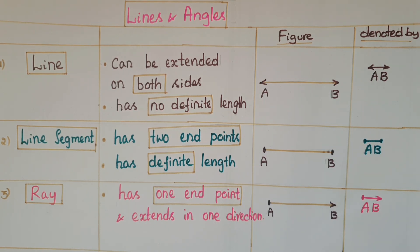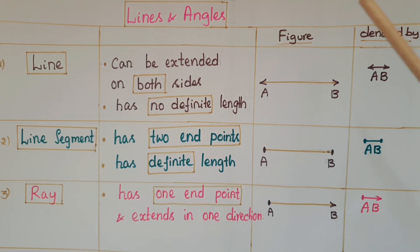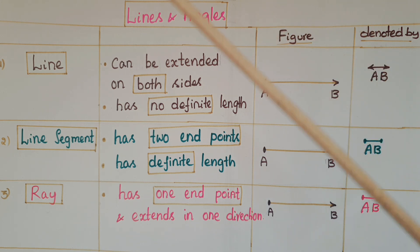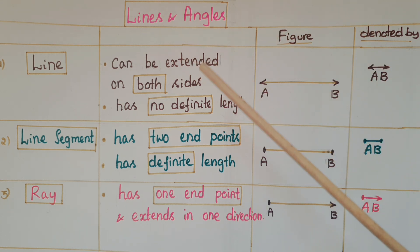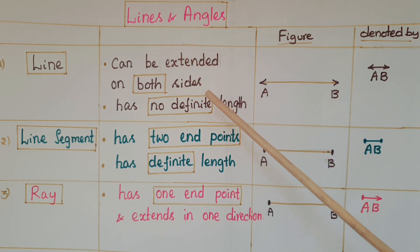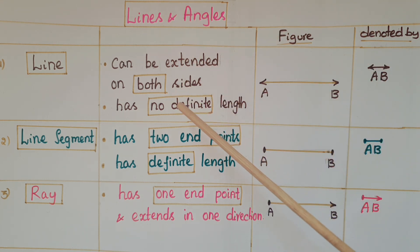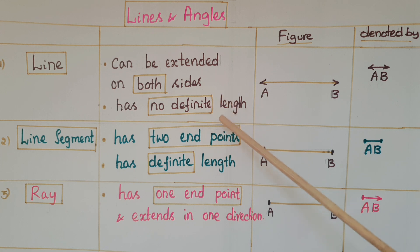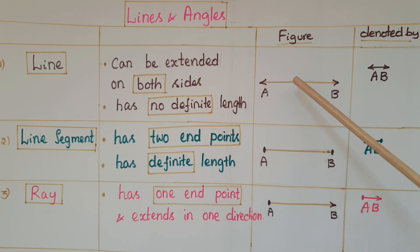Hello everyone, today I am going to tell some basics of lines and angles. The first one is line. A line can be extended on both sides and it has no definite length. This is the figure of a line.